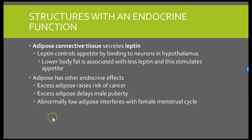And then we have our adipose connective tissue, which is also going to secrete a hormone known as leptin. Leptin helps to control our appetite by binding to neurons in the hypothalamus. If you have lower body fat, it's associated with less leptin being secreted, and this stimulates appetite. Adipose has other endocrine effects too — excess adipose raises the risk of cancer, will delay male puberty, and abnormally low adipose will interfere with female menstrual cycles, causing a woman to lose her period. That is it for the endocrine lecture — if you have any questions, please let me know.